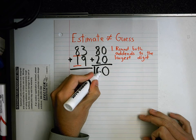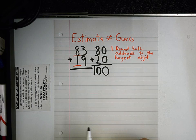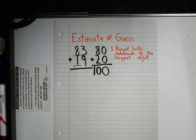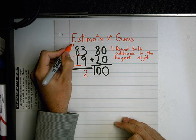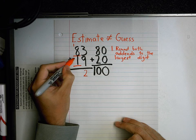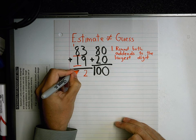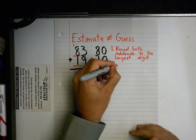Okay, so I estimated. It gives me kind of a what we call a ballpark figure. Because look, if I came over here and actually added up the numbers, I'd have a 12 right here, and then 8 plus 1 plus 1 is 10. They're pretty close, aren't they?